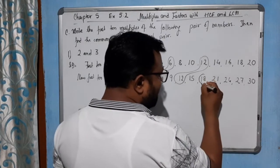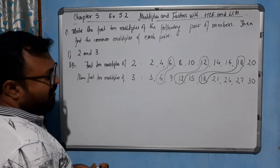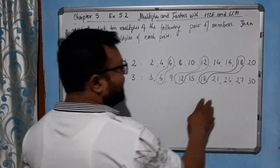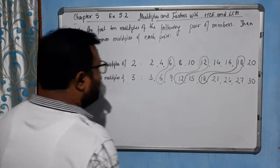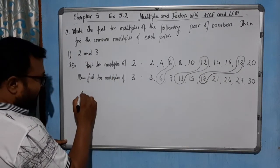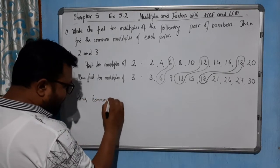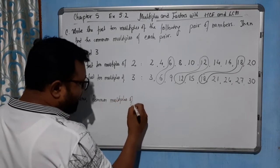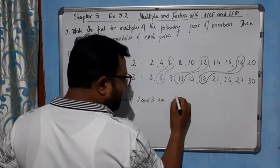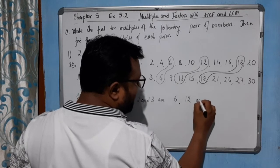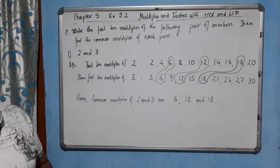You can see 18 is also common, and there is no further common multiple, so the common multiples are 6, 12, and 18. So you can write: the common multiples of 2 and 3 are 6, 12, and 18. Clear? Now come to the next one.